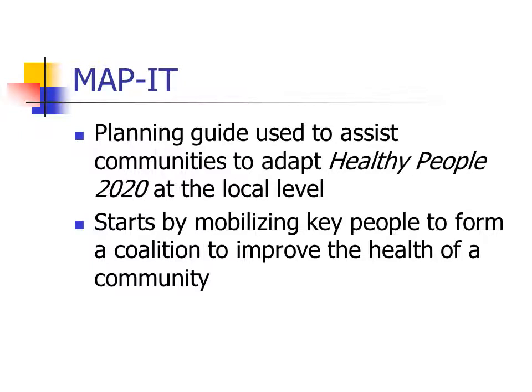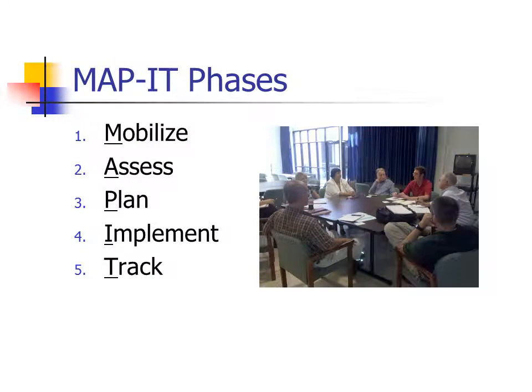MAPIT — M-A-P-I-T — was developed to help communities implement Healthy People 2020 at the local level. It starts by getting key people mobilized to form a coalition to improve the community. MAPIT is an acronym that stands for Mobilize, Assess, Plan, Implement, and Track. Hopefully you're seeing the flow: mobilize, do a needs assessment, plan with goals and objectives, implement your plan, and then track — which is another word for evaluate.